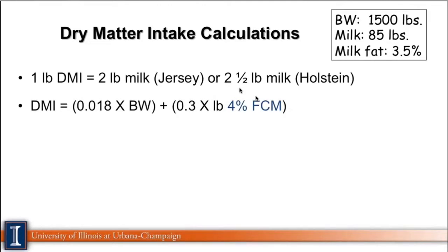For example, if we have a cow with a body weight of 1,500 pounds producing 85 pounds of milk with a given milk fat percentage, we start plugging numbers into the formula: 0.18 times the body weight gives us 27. Then I figure out the 4% fat-corrected milk by transforming the cow's actual milk into a 4% fat milk equivalent.